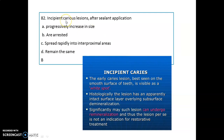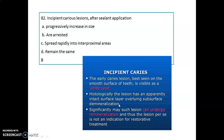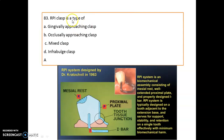If there is an incipient carious lesion, what will happen after salivary remineralization? Remember, the carious lesion is arrested. The early carious lesion best seen on the smooth surface of teeth is visible as a white spot. Histologically, they have an intact surface layer overlying a subsurface demineralization. Such lesions may undergo remineralization by use of a calcium sucrose phosphate paste.